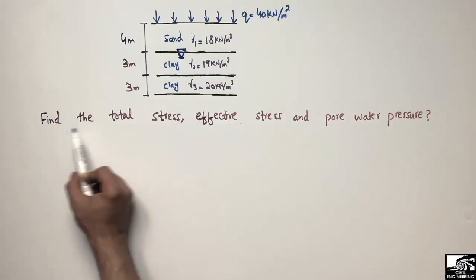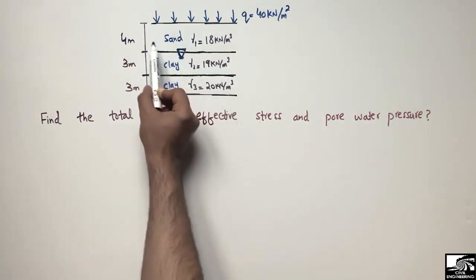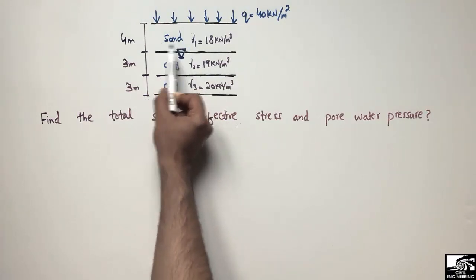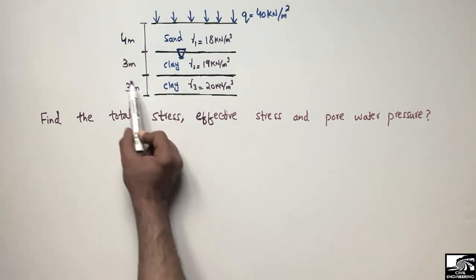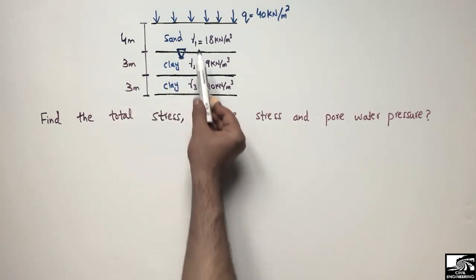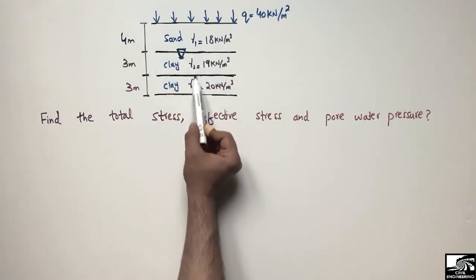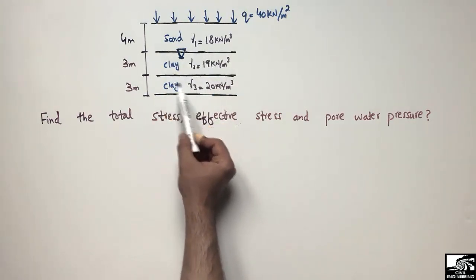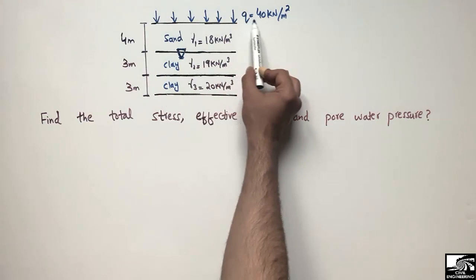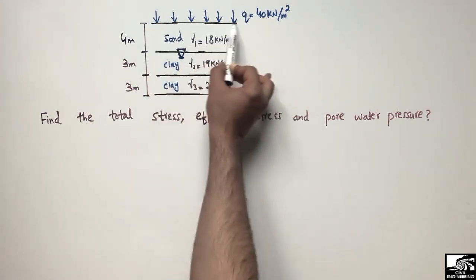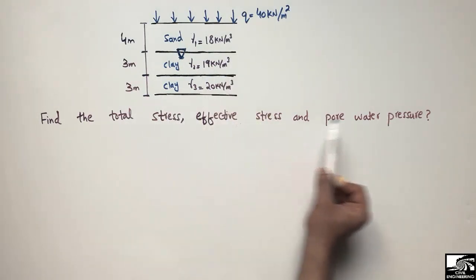The problem states: find the total stress, effective stress, and pore water pressure. The soil profile given to us consists of sand and clay. The sand has a thickness of 4 meters while the clay has two layers, each 3 meters thick. The corresponding unit weights are given: gamma 1 represents sand, and gamma 2 and gamma 3 represent clay with different unit weights. There is also an external pressure of 40 kN/m² acting at the top of the soil. We have to find and draw the profile of total stress, effective stress, and pore water pressure.